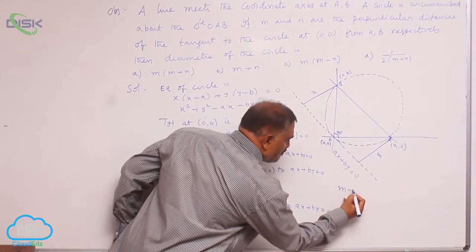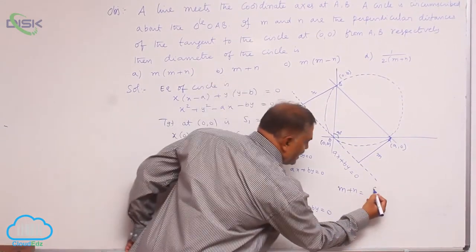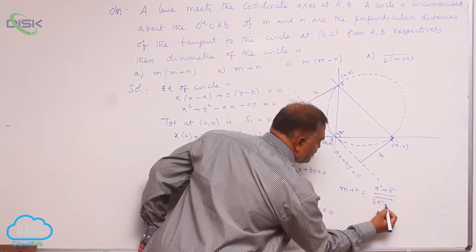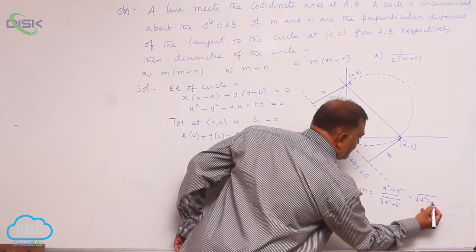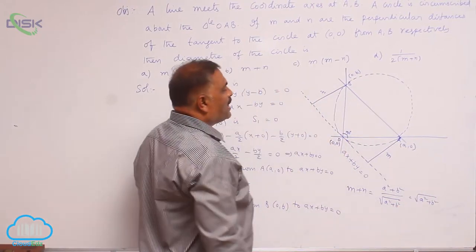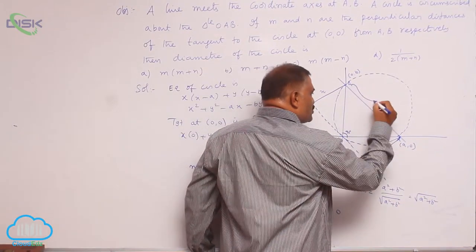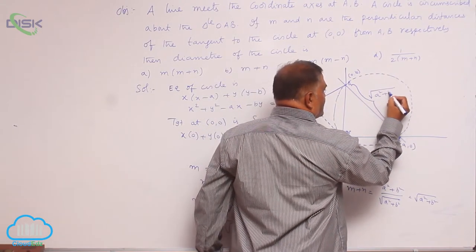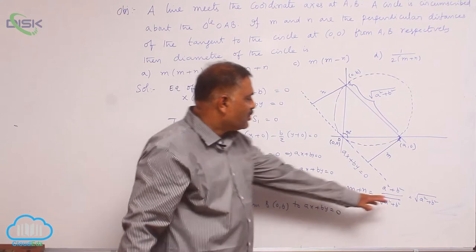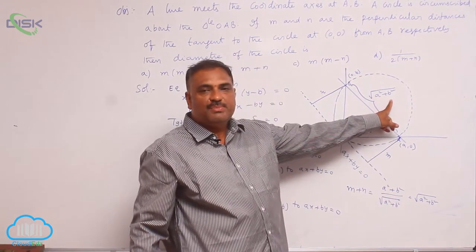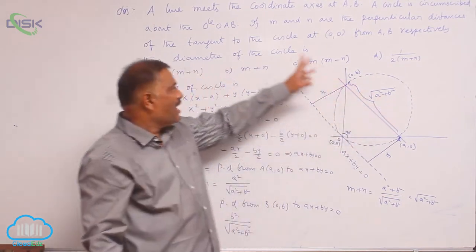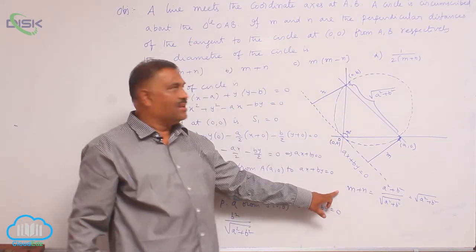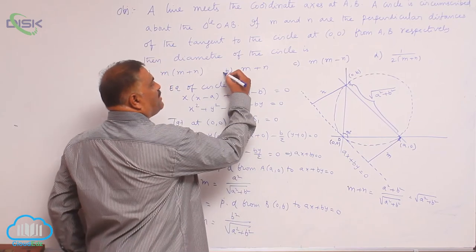We calculate M plus N equals A squared plus B squared divided by the square root of A squared plus B squared, which is nothing but the square root of A squared plus B squared. Observe that A and B are the ends of the diameter, so the distance is the square root of A squared plus B squared, which is the diameter of the circle. In terms of M and N, the diameter is given by M plus N. Hence, option B is correct.